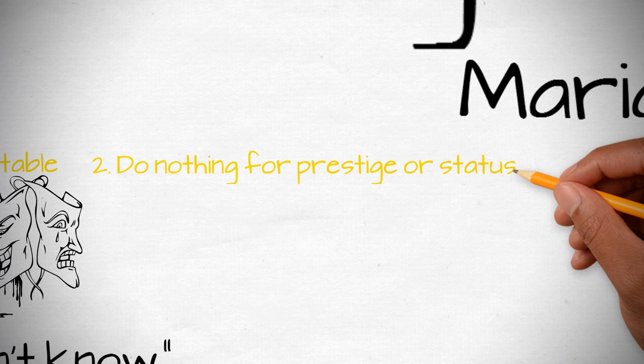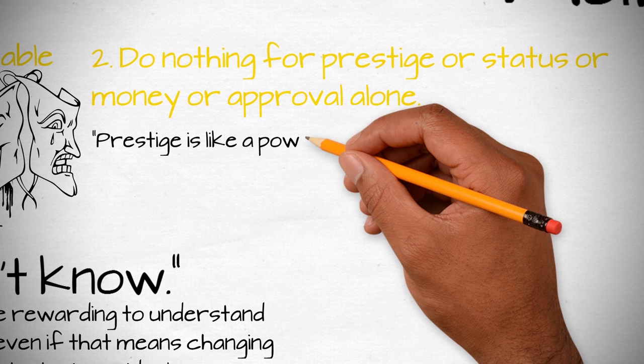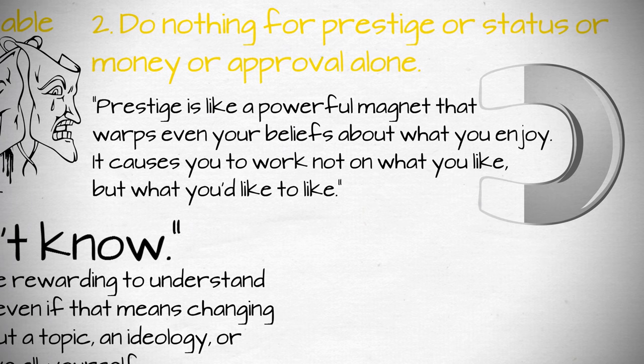Number 2. Do nothing for prestige or status or money or approval alone. As Paul Graham observed, prestige is like a powerful magnet that warps even your beliefs about what you enjoy. It causes you to work not on what you like, but what you'd like to like.